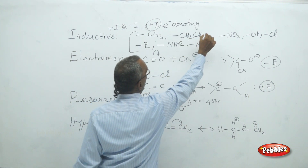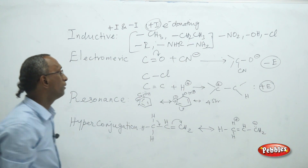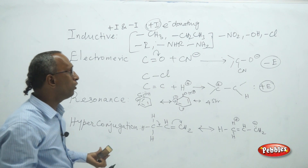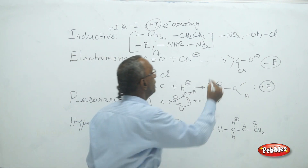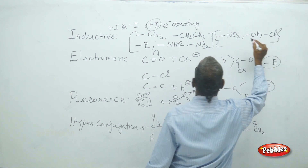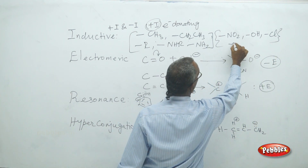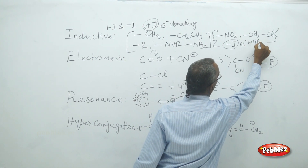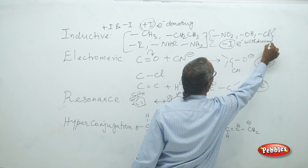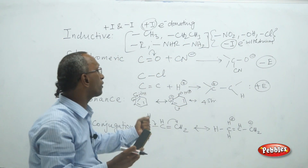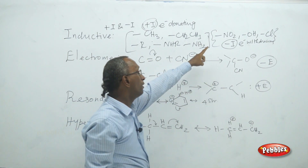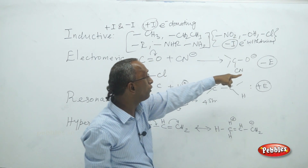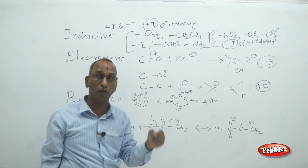Examples of plus-I groups include methyl, ethyl, alkyl, alkylamino, and amino groups. Whereas electron-withdrawing groups are called minus-I effect groups. If these groups are present, they withdraw and accept electrons from the adjacent carbon atom.